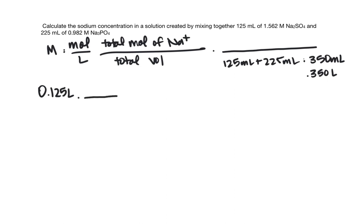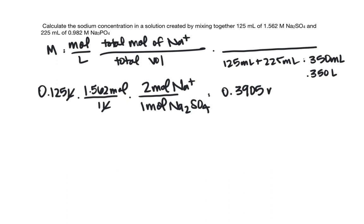We're going to multiply that by the molarity of 1.562 moles in one liter. So our liters are going to cancel, and for every one mole of Na2SO4, there are two moles of Na plus. And this gives you 0.3905 moles.